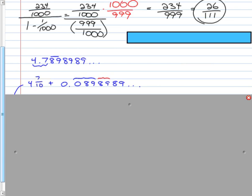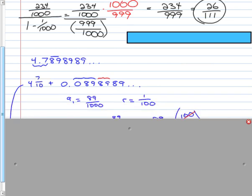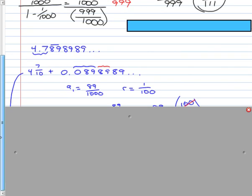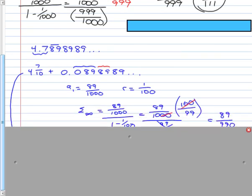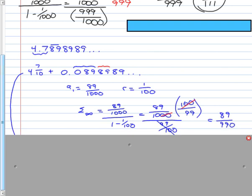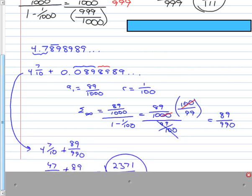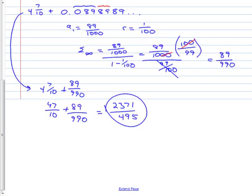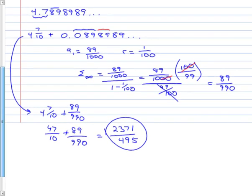My repeating is 1 one-hundredth, because there's two decimal places. So my first term is 89 thousandths, and my common ratio is 1 one-hundredth. Then I apply it to my formula down here. First term divided by 1 minus the common ratio. We go through it, and we get 89 over 990. That's just the repeating part. We need to add that to 4 and 7 tenths. So we'll take our 4 and 7 tenths, and add our 89 over 990 to it, get our common denominator and put it together, and there it is.